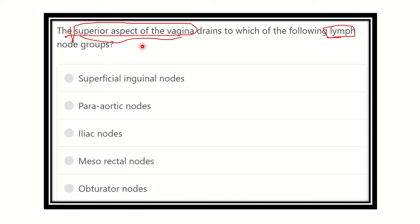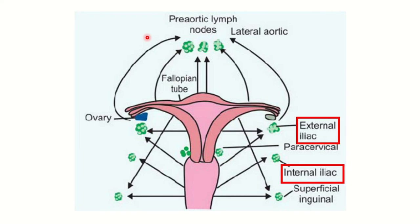Here we can see the female genital tract. This is the fundus of the uterus, then the body and cervix, and below the cervix is the vagina. We can also see the fallopian tube and ovary. The lower part of the vagina drains to the superficial inguinal lymph nodes, while the upper or superior part of the vagina drains into the external iliac group of lymph nodes.